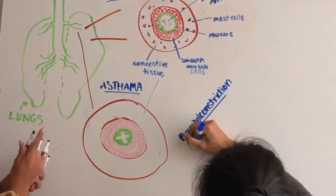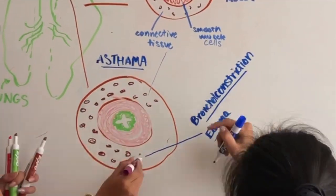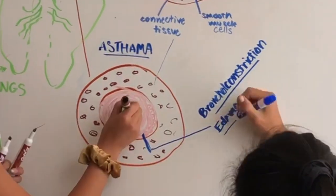During bronchoconstriction, there undergoes a process called edema in which the connective tissue swells. There is also an overproduction in mucus.